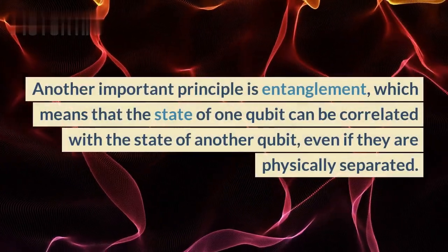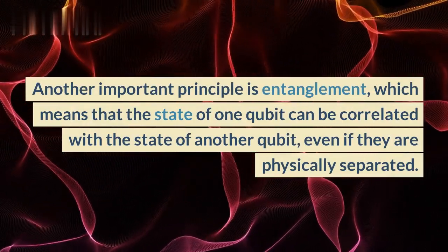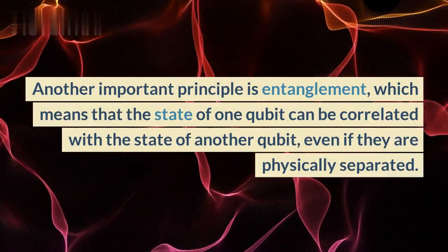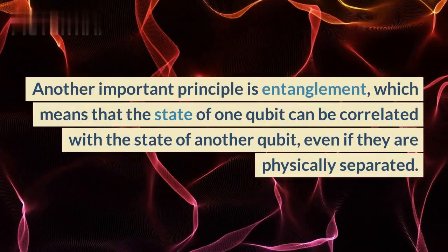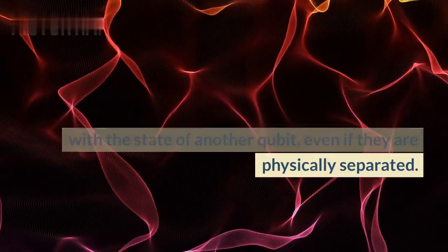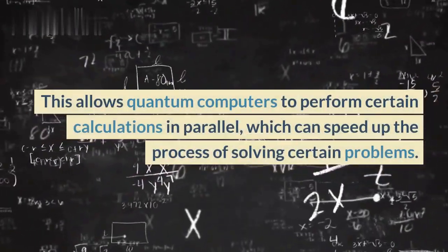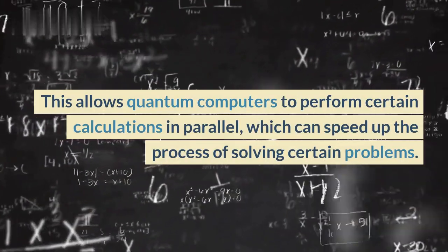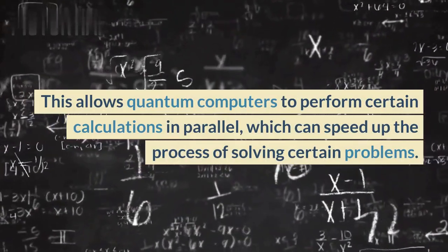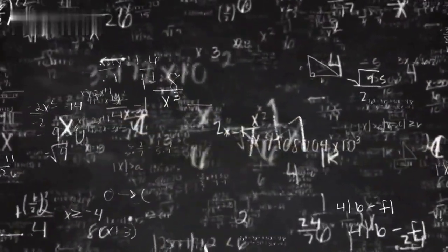Another important principle is entanglement, which means that the state of one qubit can be correlated with the state of another qubit, even if they are physically separated. This allows quantum computers to perform certain calculations in parallel, which can speed up the process of solving certain problems.